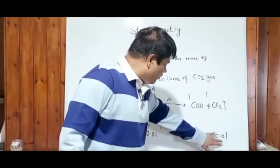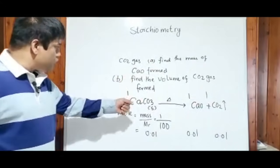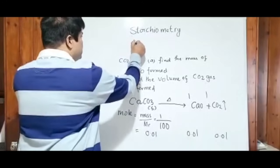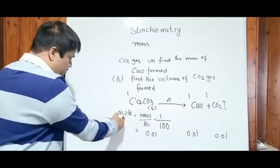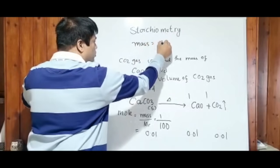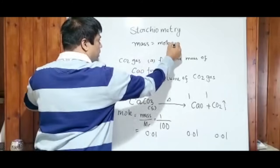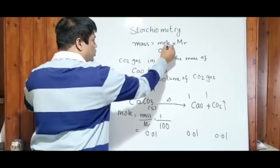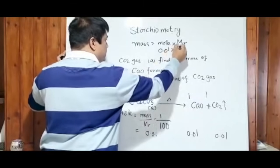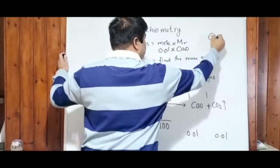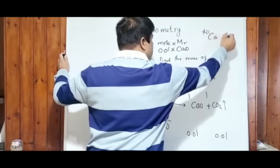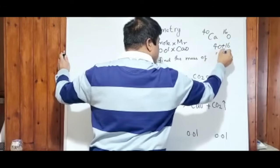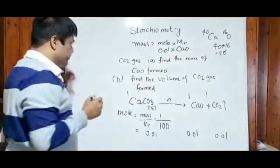Look at the question — we have to work out the mass of calcium oxide formed. Mass equals mole times Mr. The mole we got is 0.01. The Mr of calcium oxide (CaO): calcium Ar is 40, oxygen Ar is 16, so 40 plus 16 equals 56. Therefore mass = 0.01 × 56.